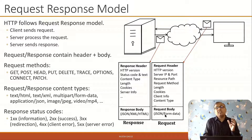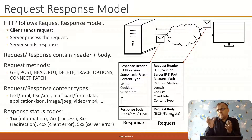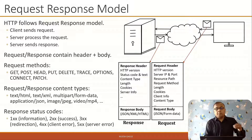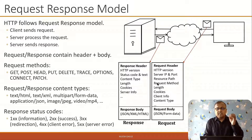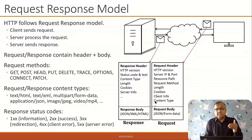The request body can have data in different formats — it could be XML format, JSON format, or form data in key-value pairs separated by ampersands. The number of bytes of that data is communicated in the Content-Length header, and the data type is given in the Content-Type header.